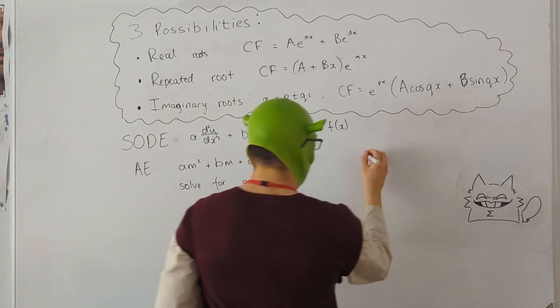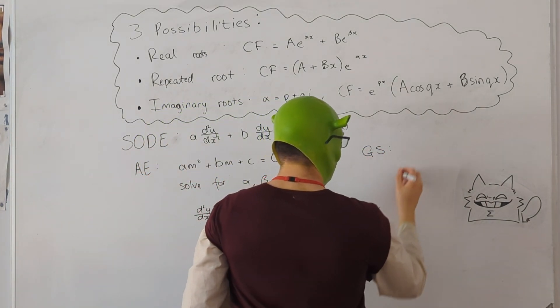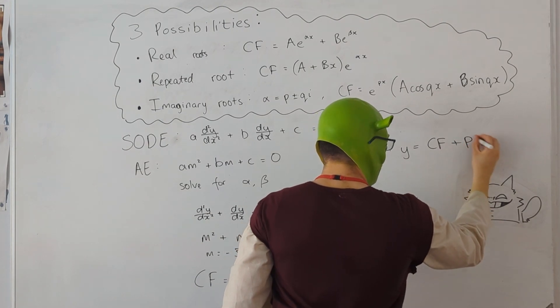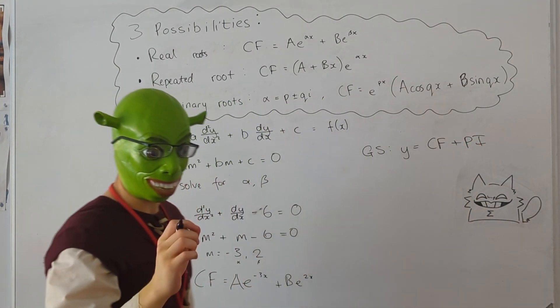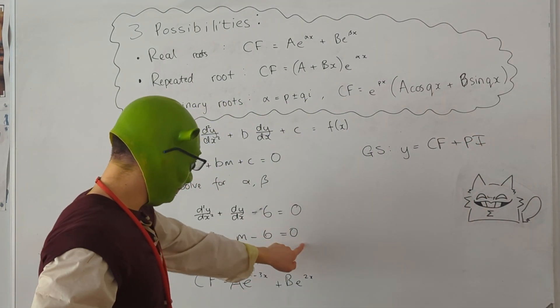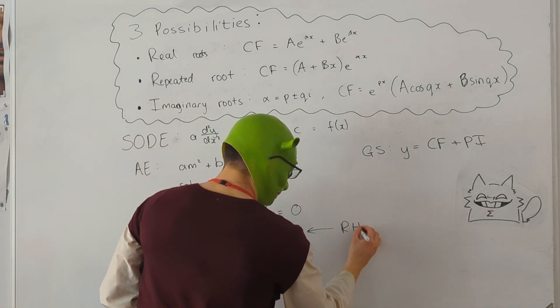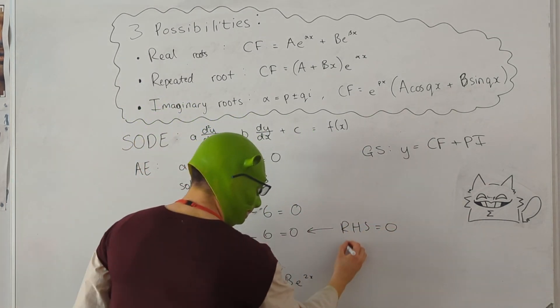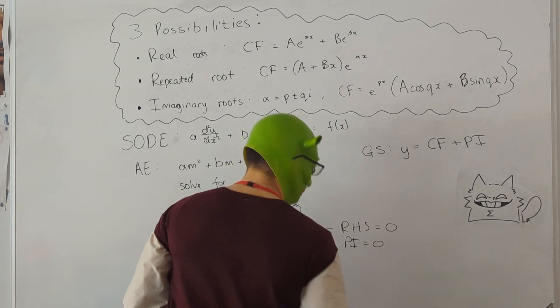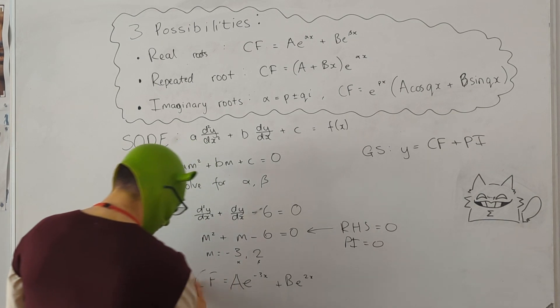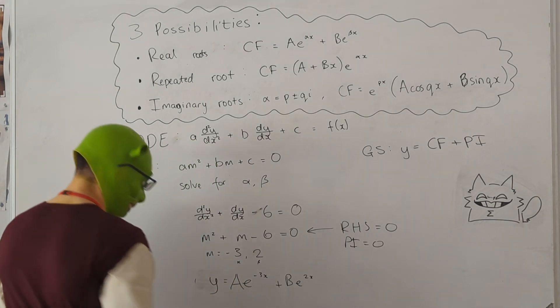Now, to find our general solution, Y equals complementary function plus particular integral. Now, in this case, on the right-hand side, we have a 0. So if the right-hand side equals 0, then the particular integral also equals 0. So CF plus 0 is just CF, so Y is just that.